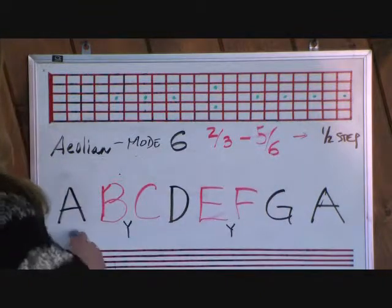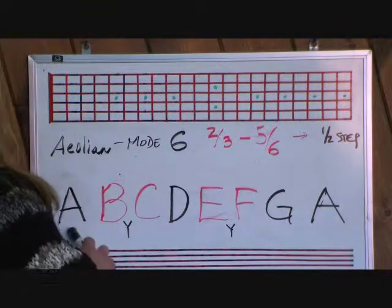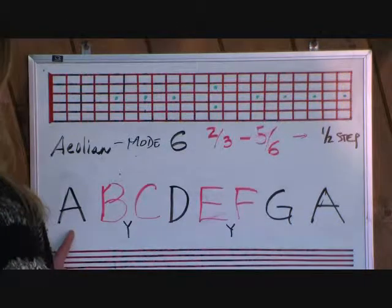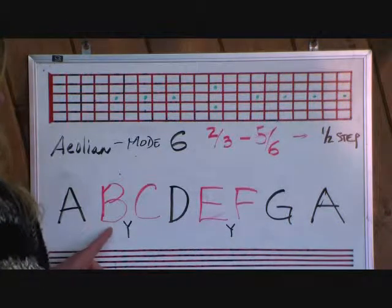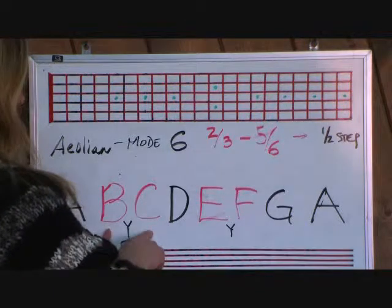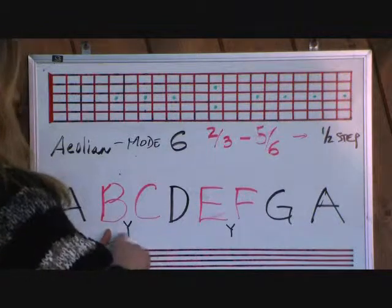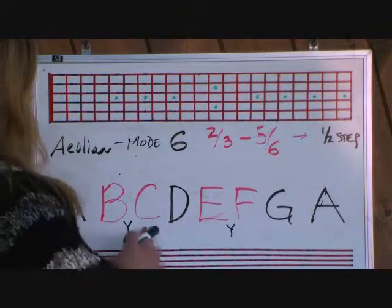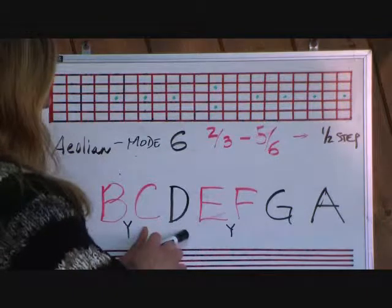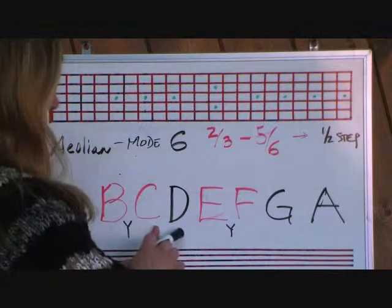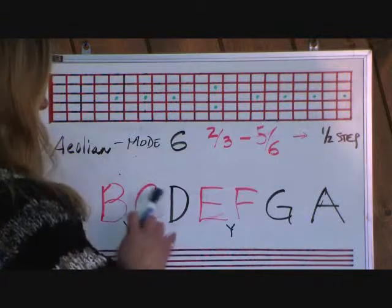We're going to start with the first step, A. A to B needs to be a full step, so we leave that alone. The second step of the scale, B to C, is a half step, so you don't need to do anything. The third step, C to D, needs to be a whole step — leave that one alone also, it's already a whole step.